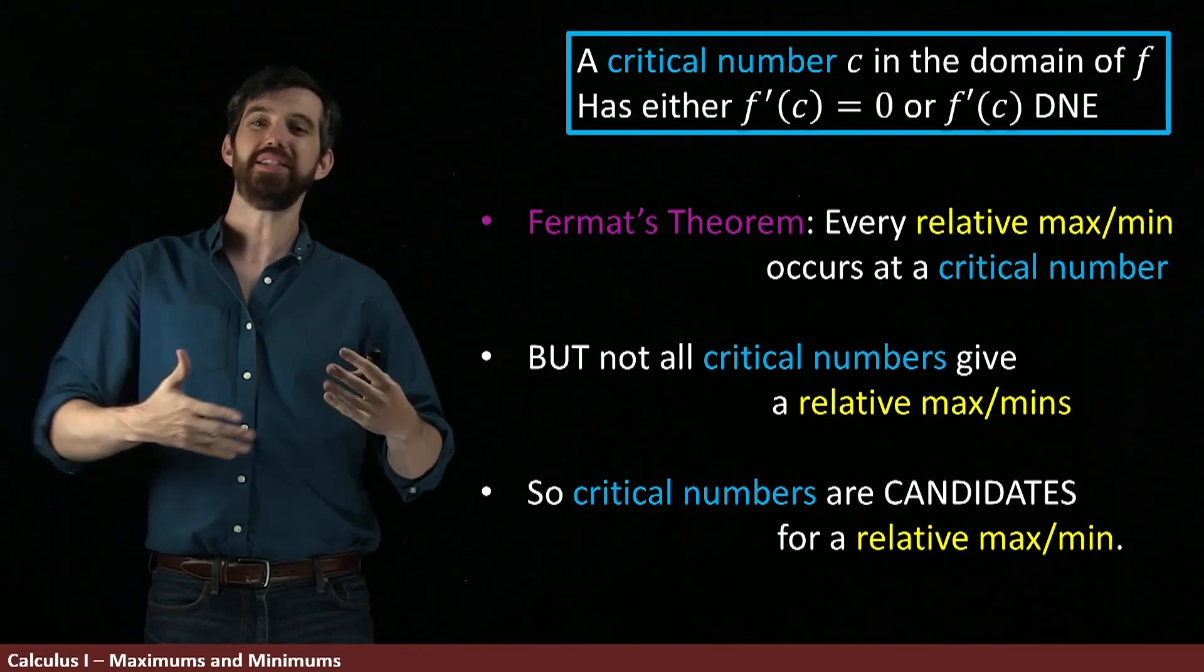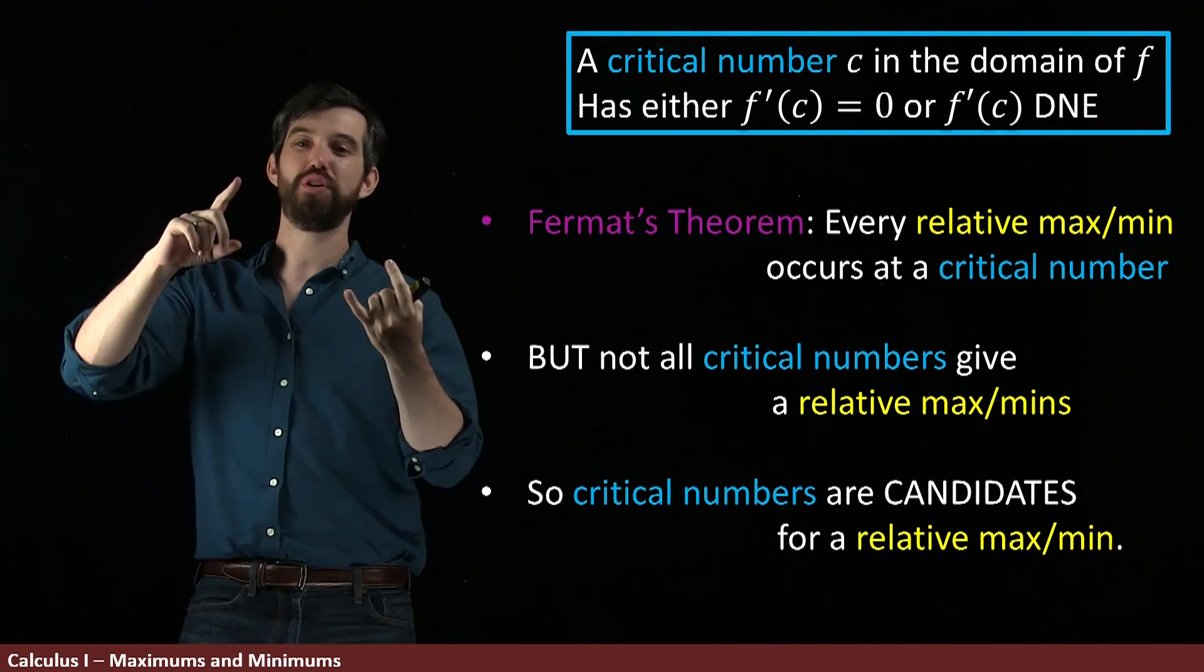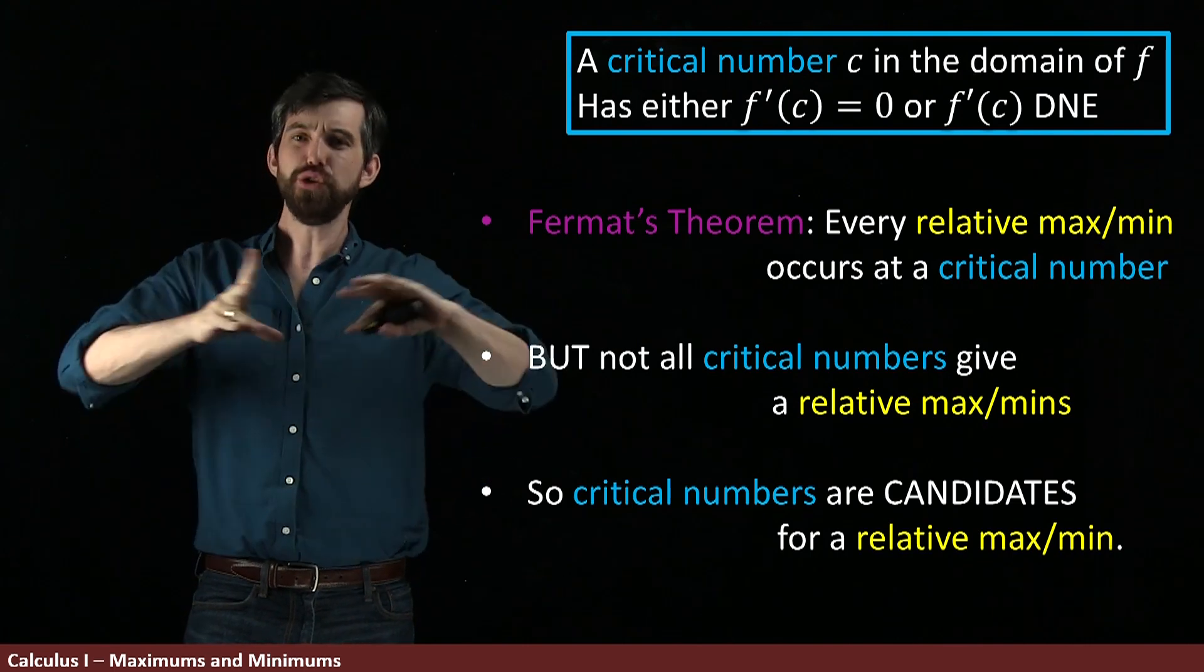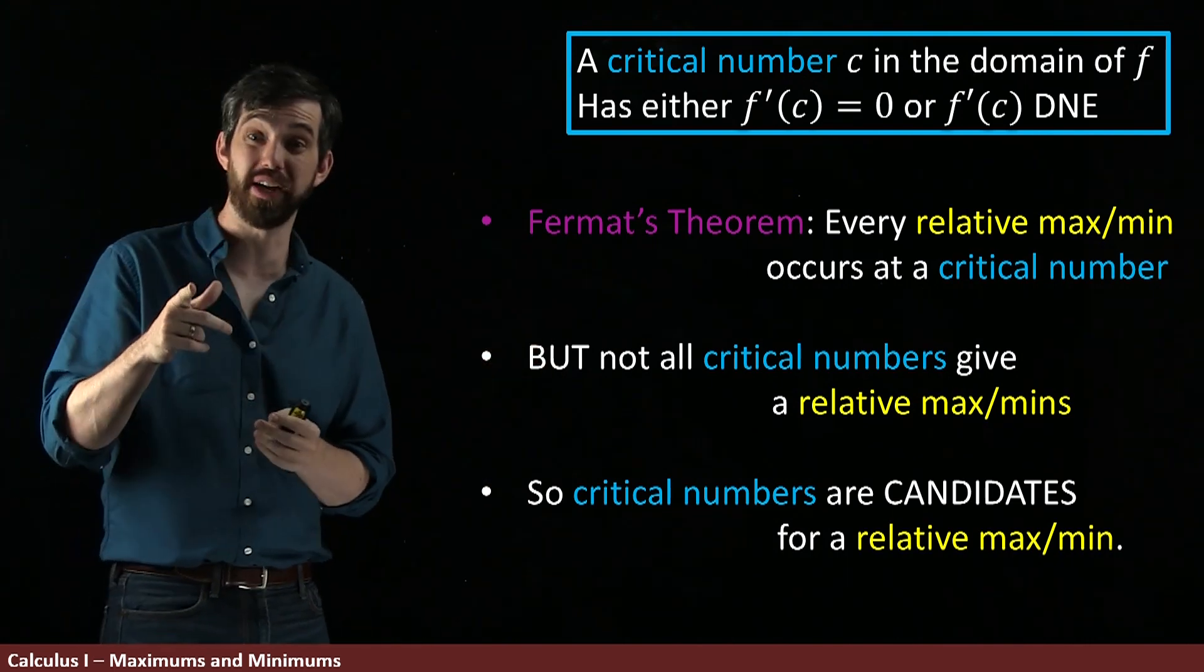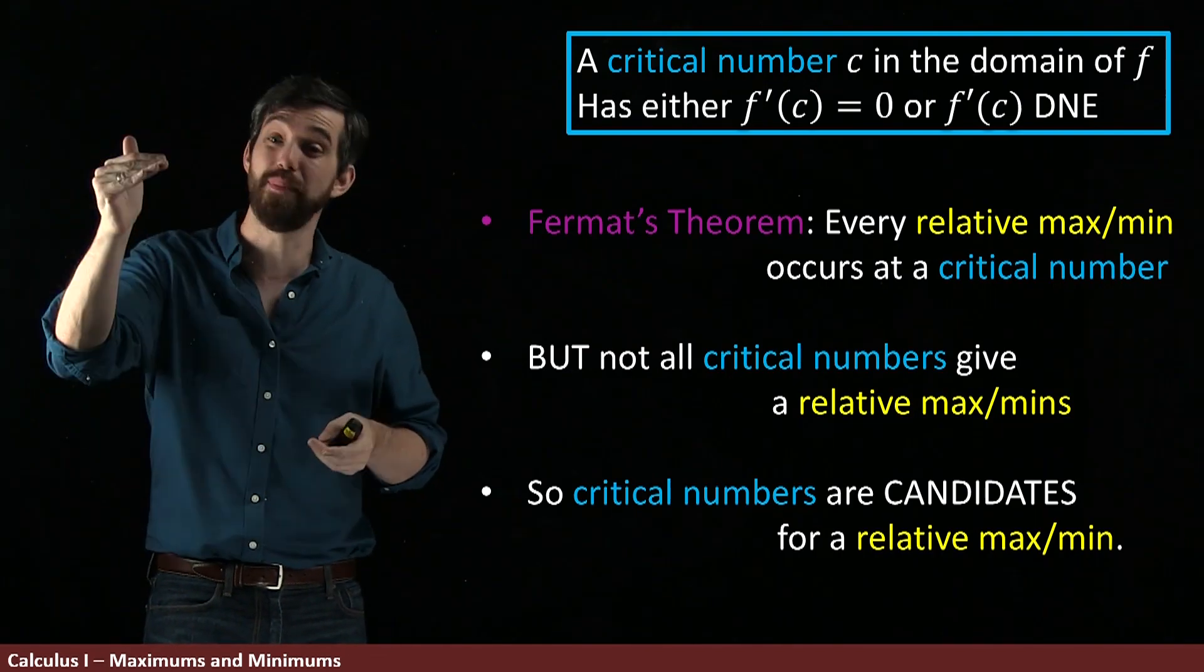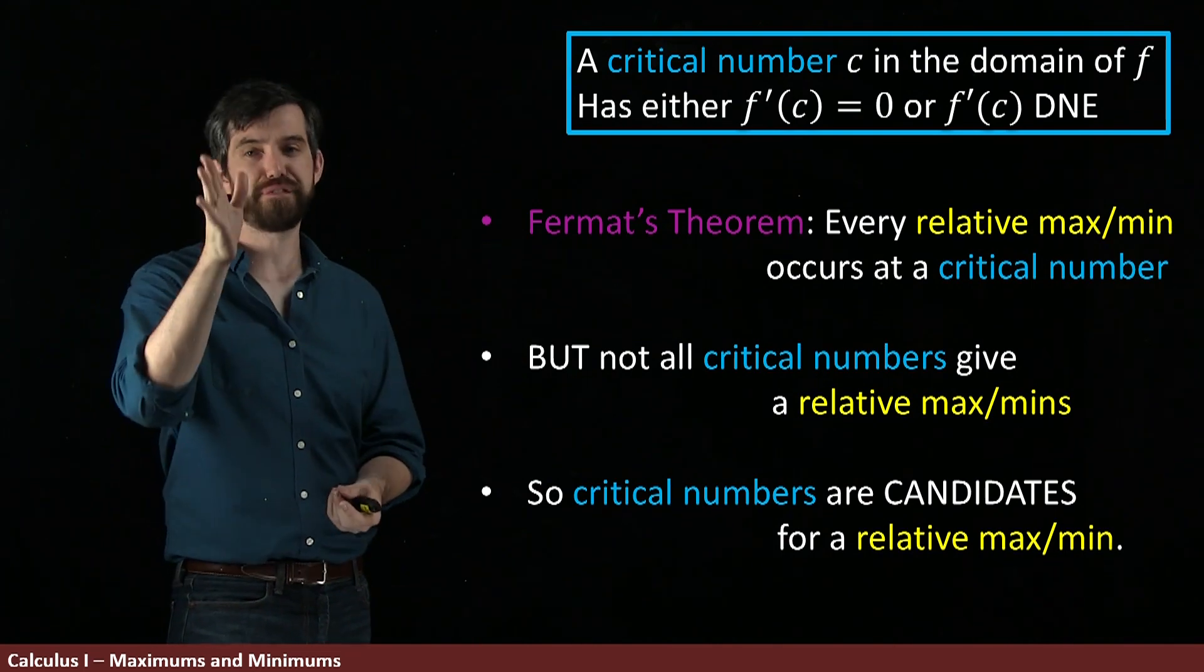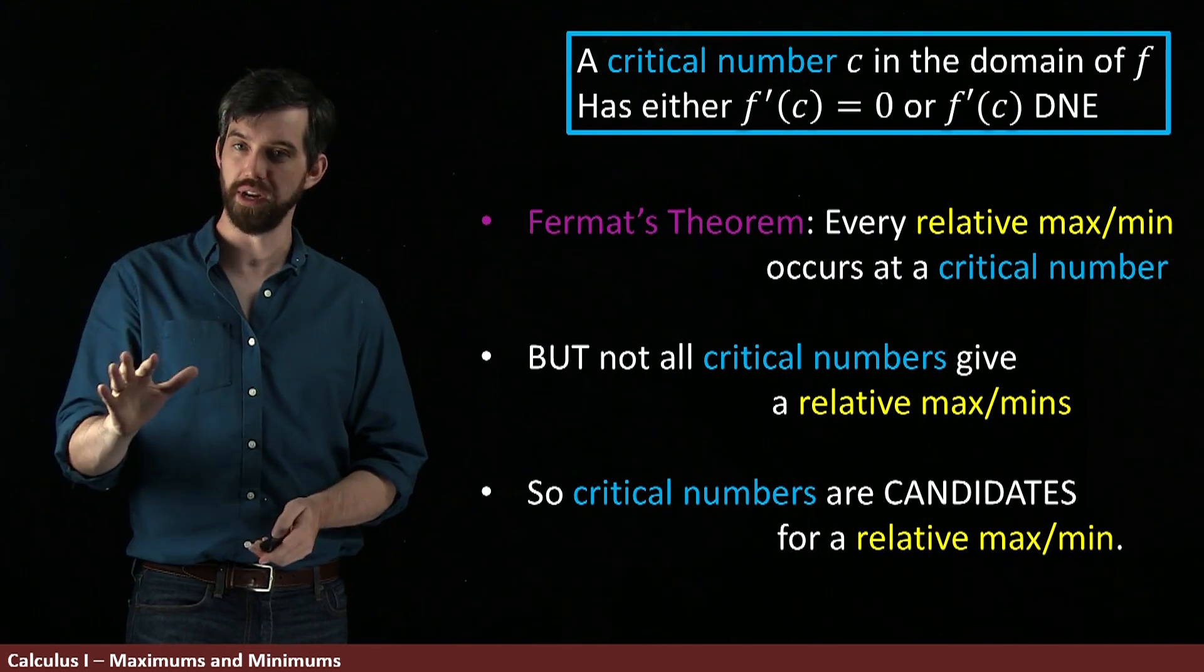Or another way to rephrase it is to say that the critical numbers are the candidates to be relative maximums or minimums. So the process goes a little bit like this. You go and find all the critical numbers. You take its derivative. You figure out where the derivative is zero or where the derivative does not exist. And that gives you the set of candidates, but only some of them are maximums and minimums. And worse still, if I just tell you that it's a critical number, you don't know which it is. Is it a max? Is it a min? Or is it neither? So then you have to do some further analysis to determine whether it truly is a max, a min, or neither.